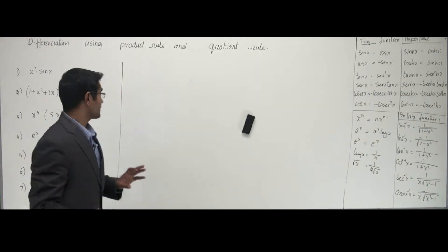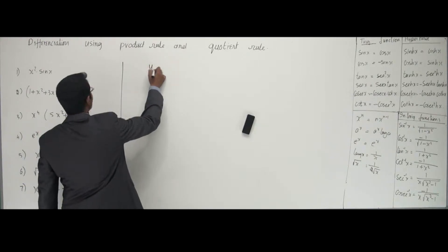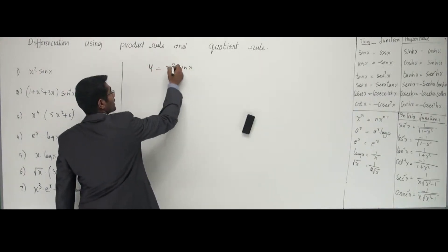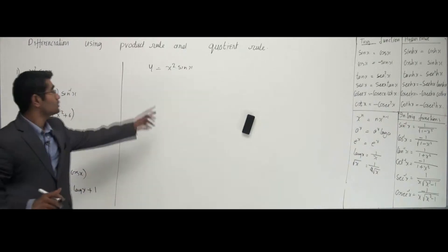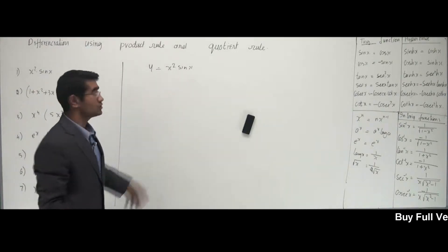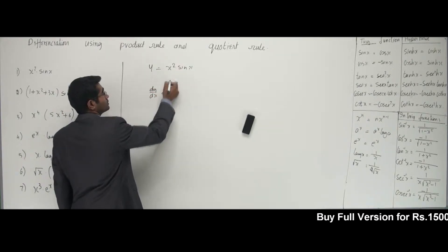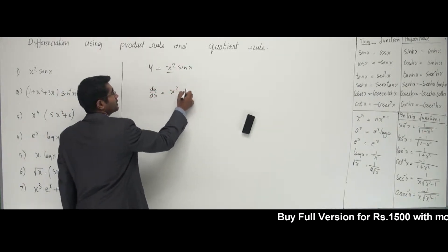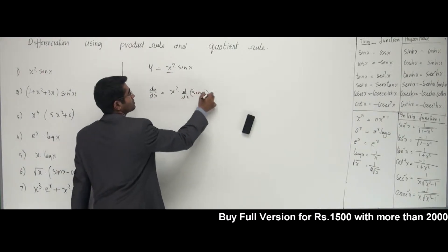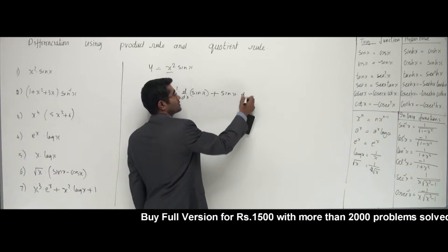Let's work on the first question. We have y = x² · sin(x). I can see that there are two functions, so we go with the product rule. So dy/dx equals: I keep the first function and differentiate the other, plus I keep the second function and differentiate the first.